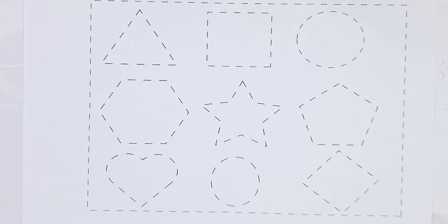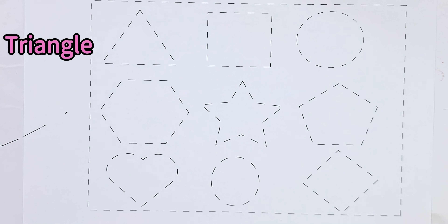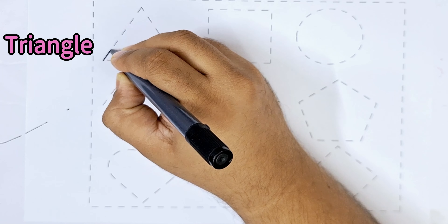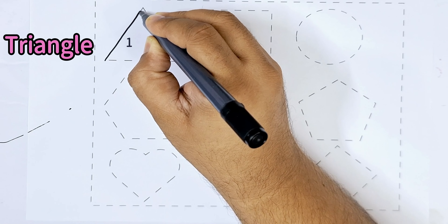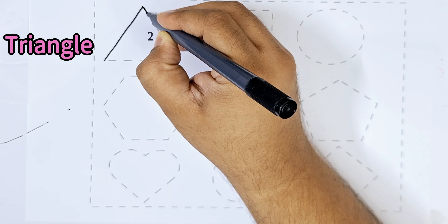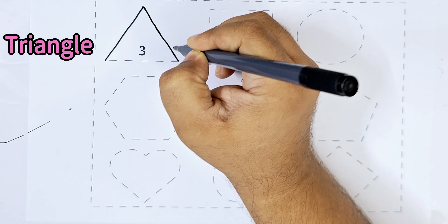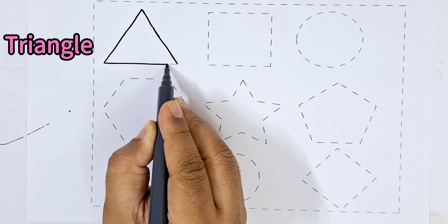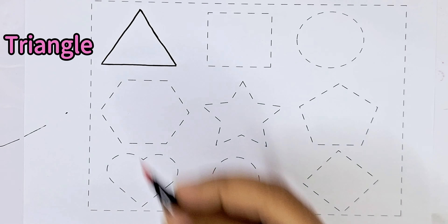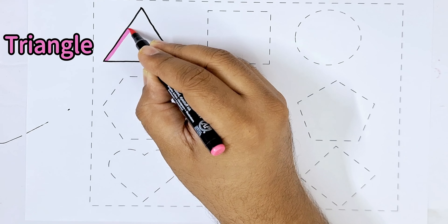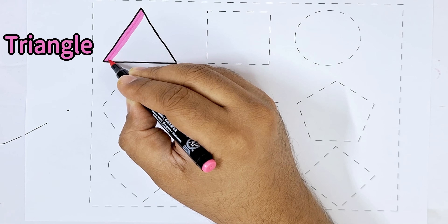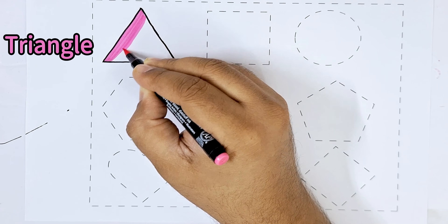Hello kids, let's learn some 2D shapes. Let's start. This is a triangle. It has three sides: one, two, three. And this is a pink color.